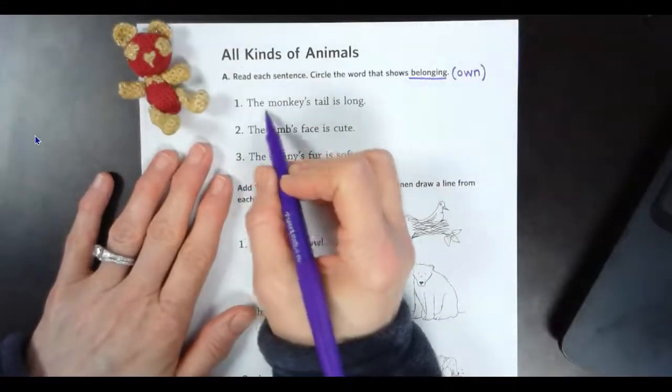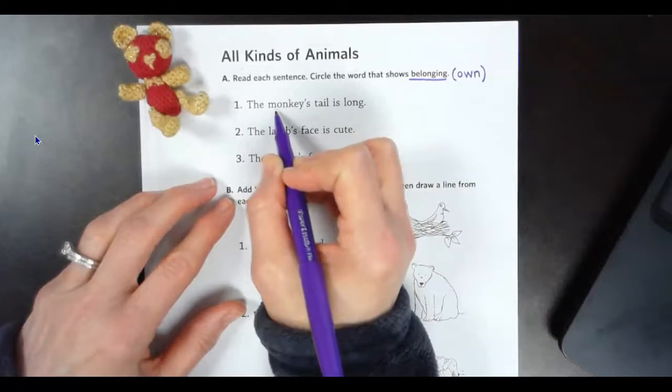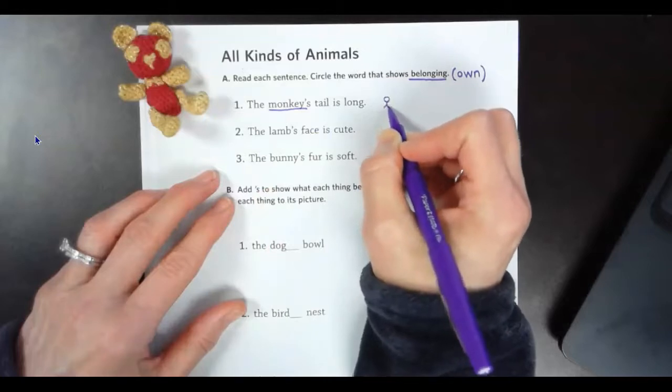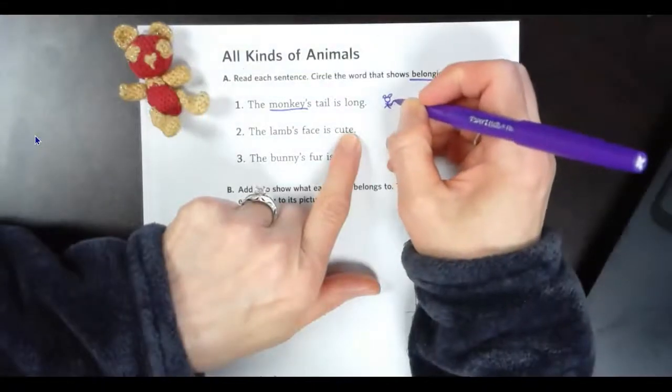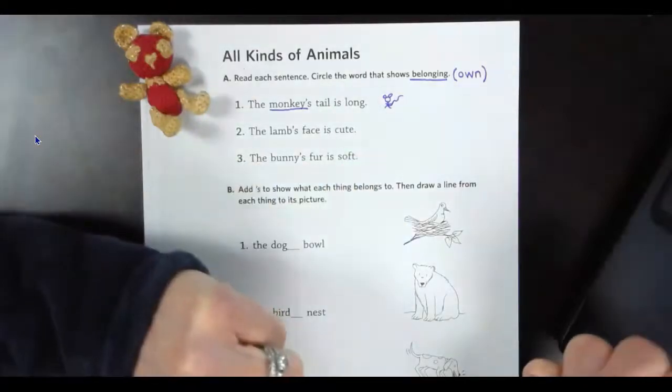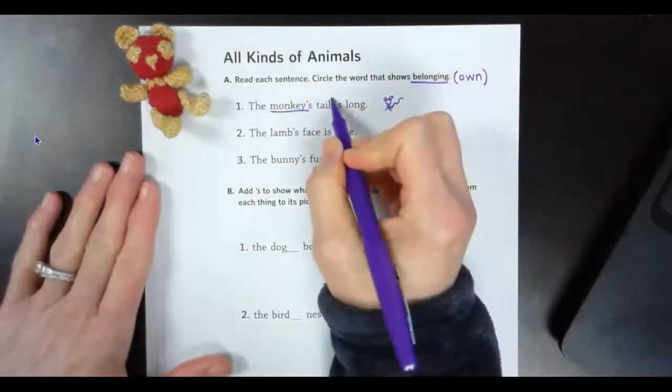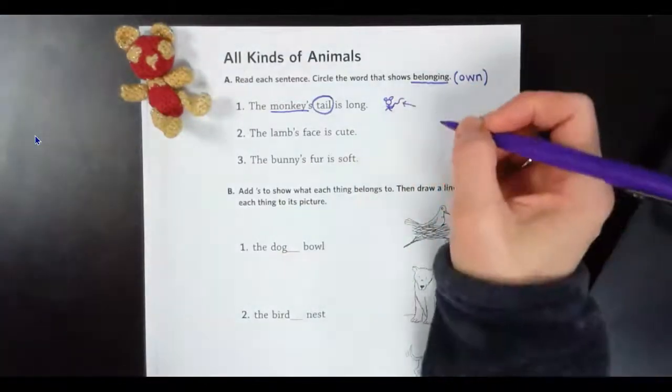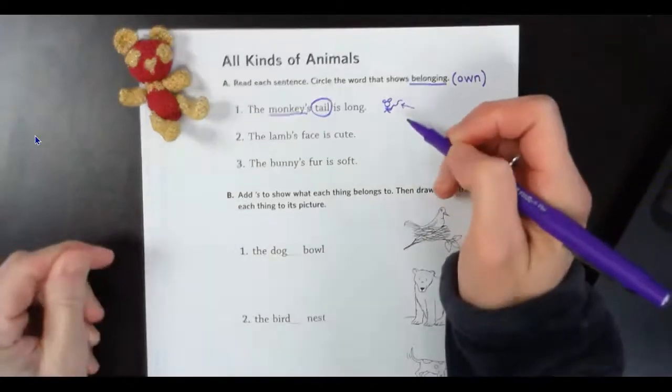All right. Here's our first one. It says, the monkey's tail is long. Okay, so we know in this particular sentence that the animal is the monkey, right? So we've got a little monkey over here. We'll give him some ears. There's our monkey. And he has a long tail. Okay. What do you think? What is the thing that that monkey owns that belongs to just that little guy? Yes, you are correct. His tail. It's his tail. That thing right there. That belongs to the monkey and nobody else. And you know how come I know? Because it's attached to his rear end. Nobody else can have it but him.